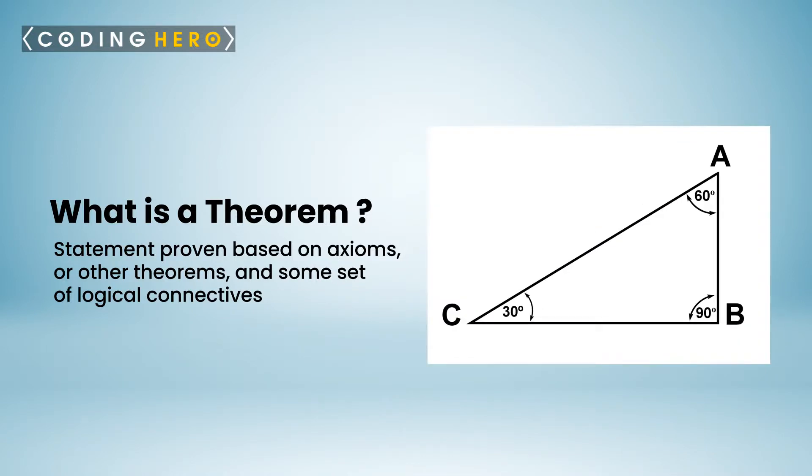For example, sum of angles in a triangle is 180 degrees is a theorem since to prove it, you need to use the concept of measure of straight angle and a pair of parallel lines and transversal.